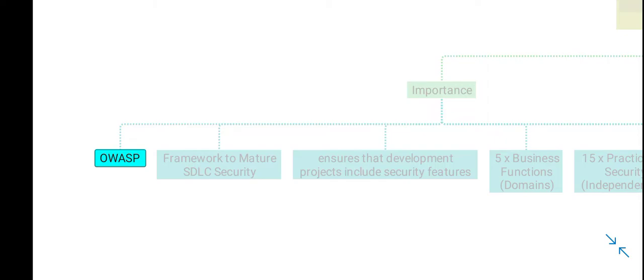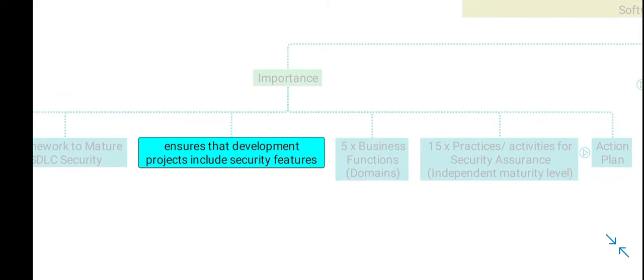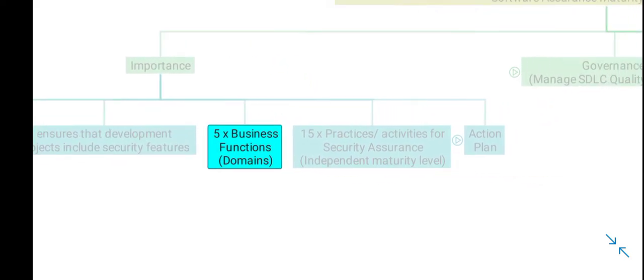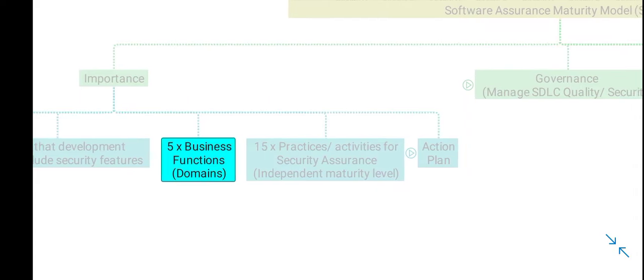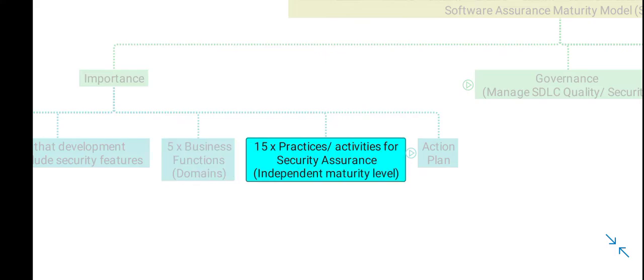The Open Web Application Security Project has developed this model. It is a framework to mature the security practices in the software development lifecycle, and it ensures that the development projects of an organization include security features. There are five business functions, also called domains, and 15 security practices across these five business functions — three security practices per business function.